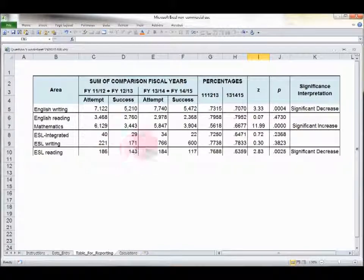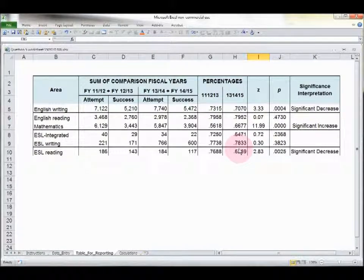ESL writing. Now, large population, 221, 766, but there's nothing there. It's not significant. Well, look carefully. It's a comparison between 77% and 78%. So the z-test has done exactly what it's supposed to do. It's told us that essentially those are about the same number. So you've got a very stable rate of success for ESL writing.